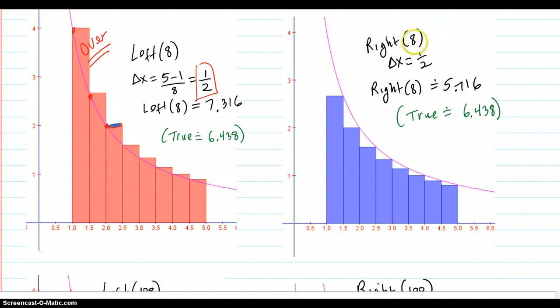And on the right side, right 8. Again, delta x is 1 half. Right 8 comes out to be 5.716 as compared to the true. So that's an underestimate, as you can see.